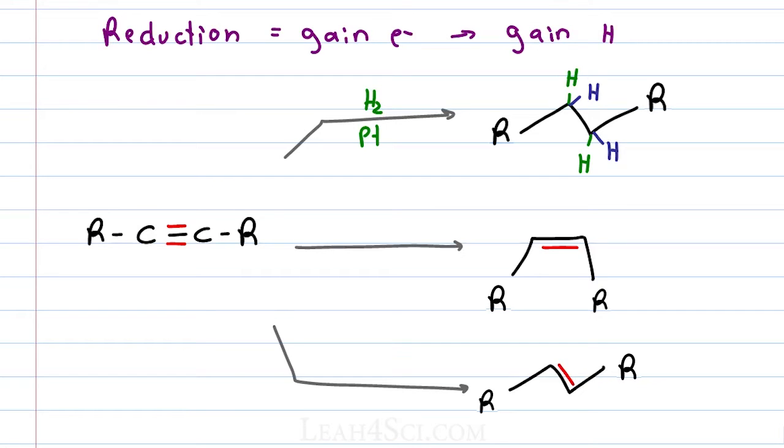The cis reduction happens in the presence of a poison metal catalyst. The most common one you'll see is the Lindlar's catalyst. So you'll write it as H2 with Lindlar's.